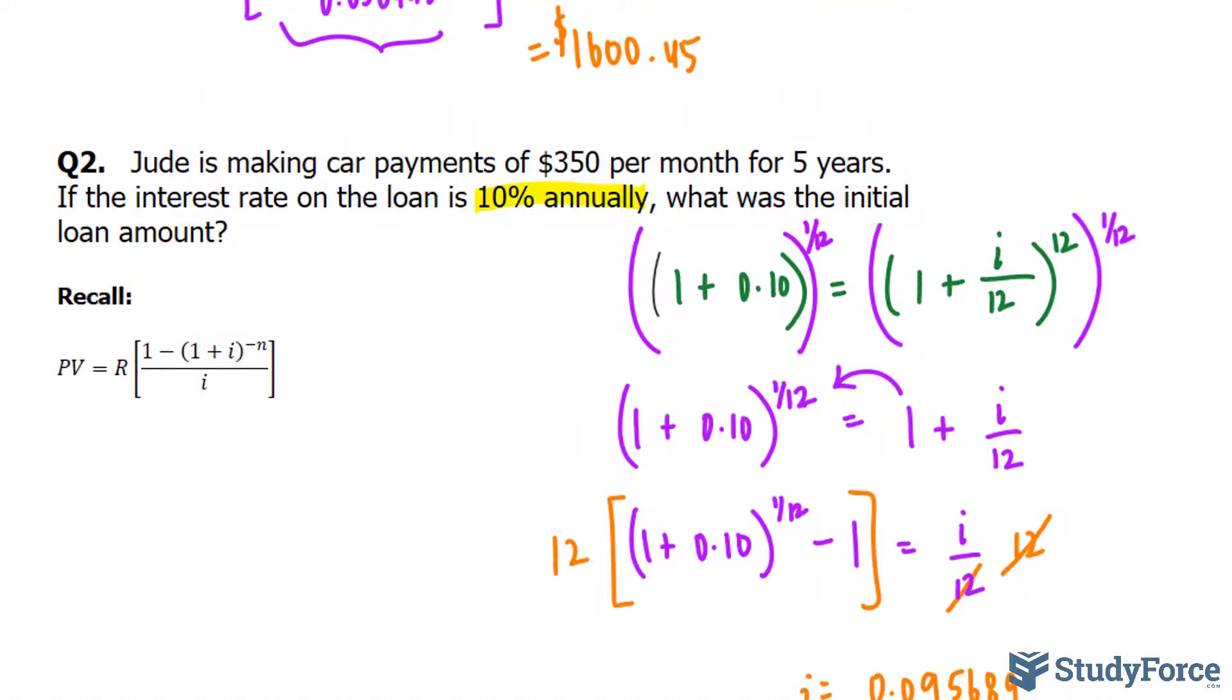Now, in case you haven't realized already, this will be the payment, 350, which is our R value. This will be happening for five years, so n will represent five times, well, we're making monthly payments, so there will be 60 payments of 350. When all is said and done, we'll find out our present value, which is represented as PV.